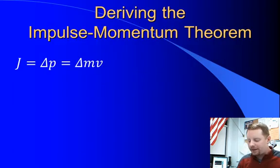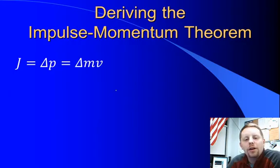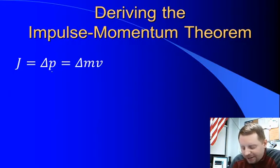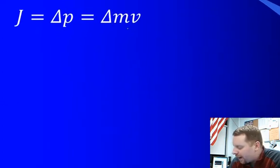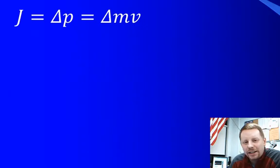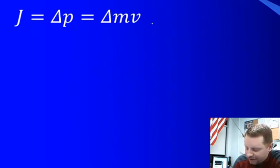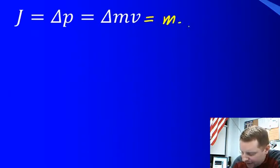Deriving the Impulse Momentum Theorem is fairly straightforward. If we start with what we already know, that impulse J is a change in momentum, which is therefore a change in mass times velocity, then realize that most of the time mass isn't changing — it's the velocity that's changing. So we could rewrite this as m delta v.